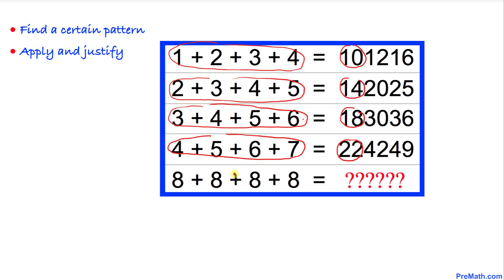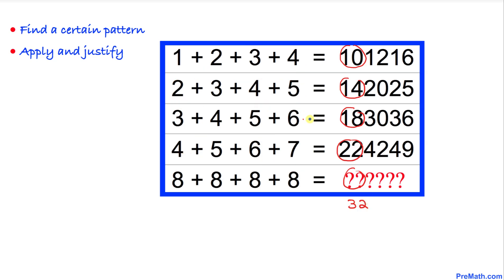So that means if we apply the same rule and add these four numbers eight plus eight plus eight plus eight, the first two digits are going to be 32. Here's our next step.